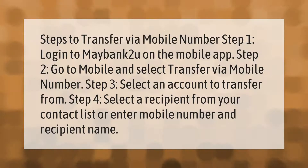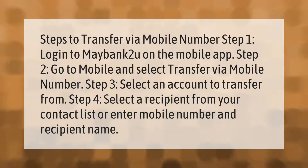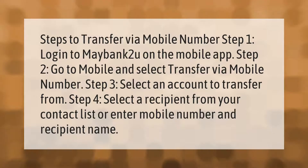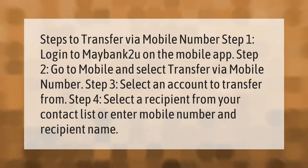Steps to transfer via mobile number. Step 1: Log in to Maybank2u on the mobile app. Step 2: Go to Mobile and select Transfer via Mobile Number. Step 3: Select an account to transfer from. Step 4: Select a recipient from your contact list or enter mobile number and recipient name.